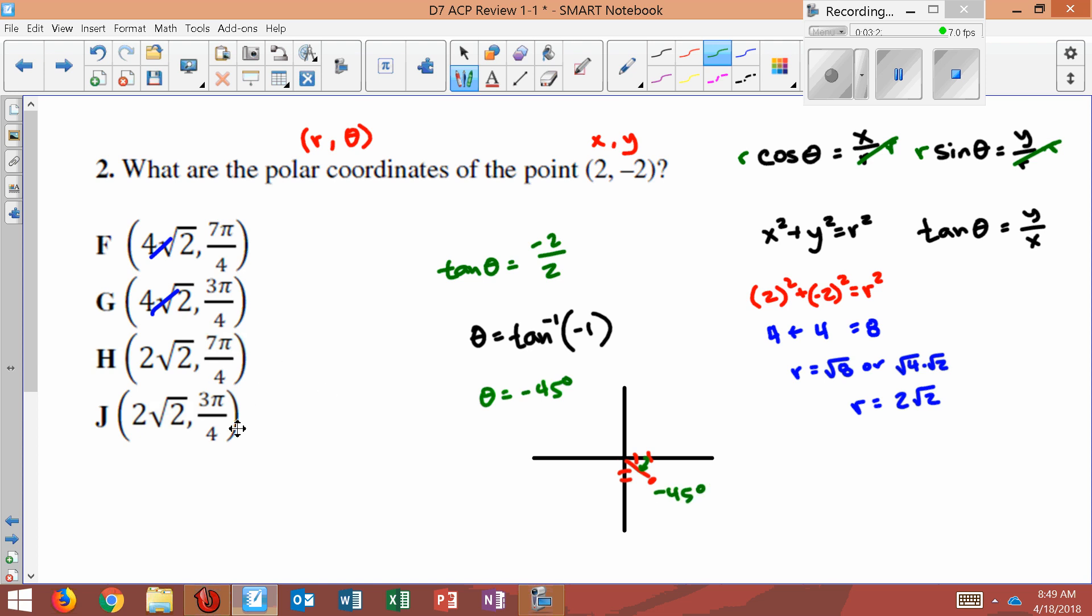Now as I look at my answers, they've given us these in radians. Now remember, this is almost 1 whole pi here. So this one would be the value if it were this way. So that one's out. 7 pi over 4 is almost 2 pi, which 2 pi is all the way back around here. So 7 pi over 4 is this answer. It's just it's gone around the circle this way. This is 7 pi over 4 going like that. So H is the right answer.